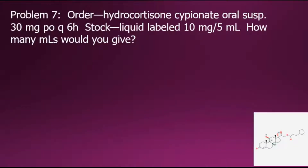Here in problem number seven, it states the order is for hydrocortisone siphonate oral suspension, 30 milligrams, PO every 6 hours. Stock is a liquid labeled 10 milligrams per 5 milliliters. How many milliliters would you give?